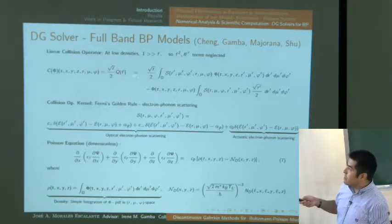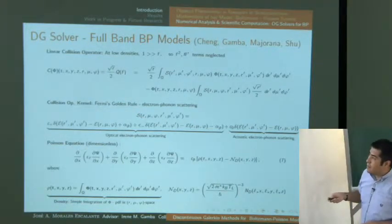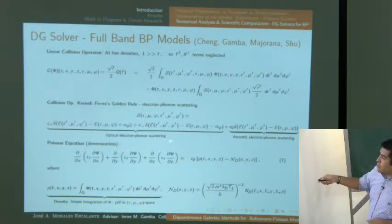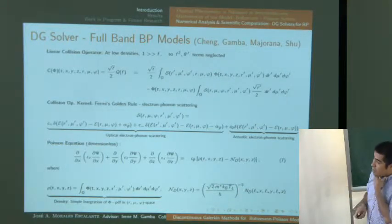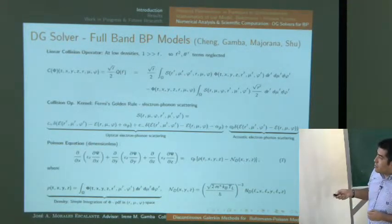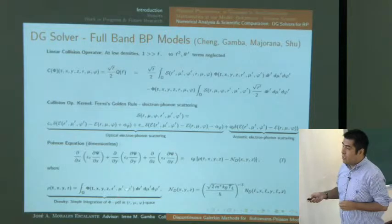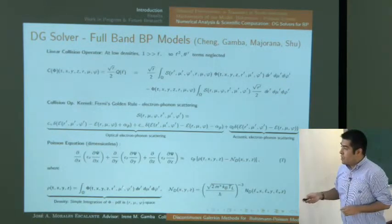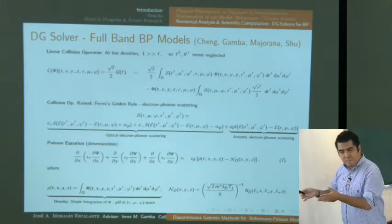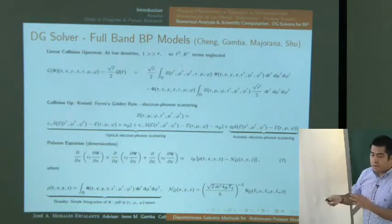The collision operator in spherical coordinates includes the Jacobian times the original collision operator. The scattering includes optical electron-phonon scattering — a jump in energy — and acoustic scattering in which the energy remains the same before and after interaction. The Poisson equation is written in the new variables, and the density is the integral of the new PDF phi with the new Jacobian. This phi is our focus as the PDF in spherical coordinate space.